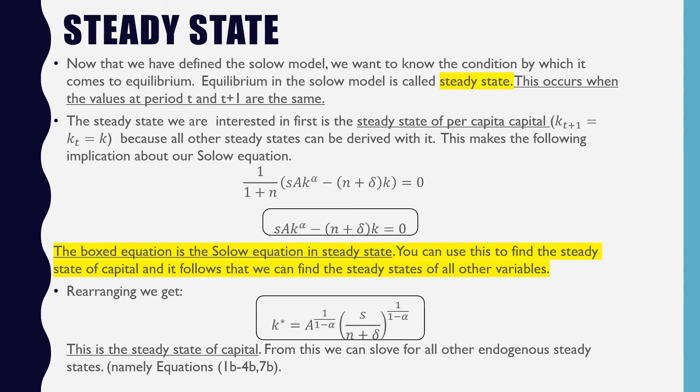The steady state we are interested in is the steady state per capita capital, which is that K_T plus 1 equals K_T equals K, because all other steady states could be derived with it. This makes the following implication about our Solow Model, which is now equal to 0 as opposed to K_T plus 1 minus K_T.